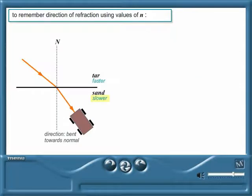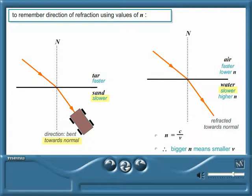Remember the trolley? You know that its path bent towards the normal when it moved from tar onto sand, because its wheels go slower in sand. For light, a bigger refractive index means that light travels slower. So for the same reason, light is refracted towards the normal when travelling from air, with a lower refractive index, into water, with a higher refractive index.